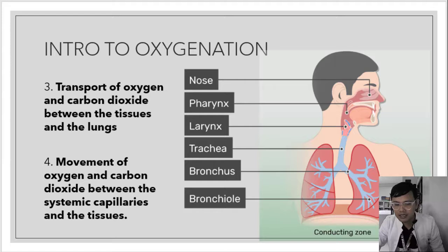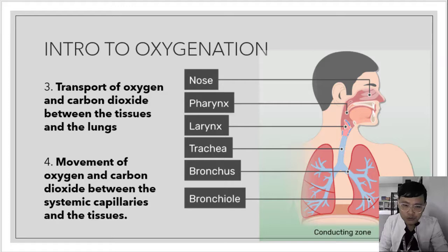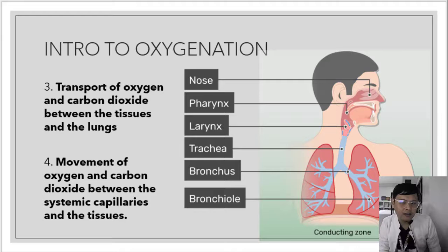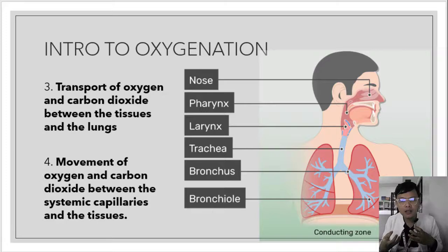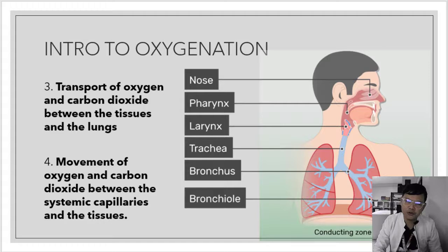The third component is transport of oxygen and carbon dioxide between the tissues and the lungs. Oxygen goes inside the cell and is delivered to different tissues with the help of hemoglobin. This blood is then called oxyhemoglobin, carrying oxygenated blood. Then the carbon dioxide from the tissues is transported to the lungs to be expelled. The carbon dioxide produced by the cells goes back to the alveoli to be released.